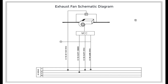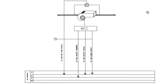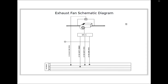Now let's talk about the exhaust fan schematic diagram. Here we have an MCC panel, and we are giving command to the MCC panel and reading the run status and alarm status from the MCC panel. Then we have a DPS switch installed on the exhaust fan to monitor its flow status.